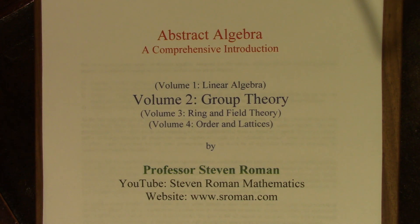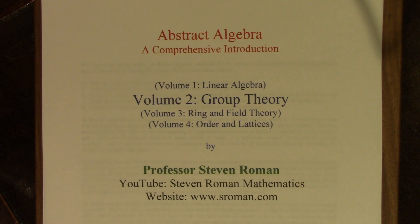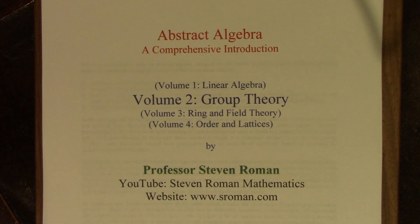There will ultimately be four parts to this abstract algebra series. The first part is linear algebra, and that is completed. Each part consists of a textbook together with accompanying YouTube video lectures. The lectures follow the textbook very closely, but there will be additional topics in the textbook that are not covered in the lecture series.